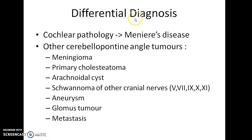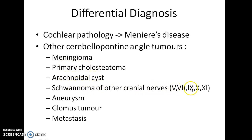Acoustic neuroma can be confused with cochlear pathology like Meniere's disease, and other cerebellopontine angle tumours such as meningioma, primary cholesteatoma, arachnoid cyst, schwannoma of other cranial nerves (5, 7, 9, 10, and 11), aneurysm, glomus tumour, and metastasis.